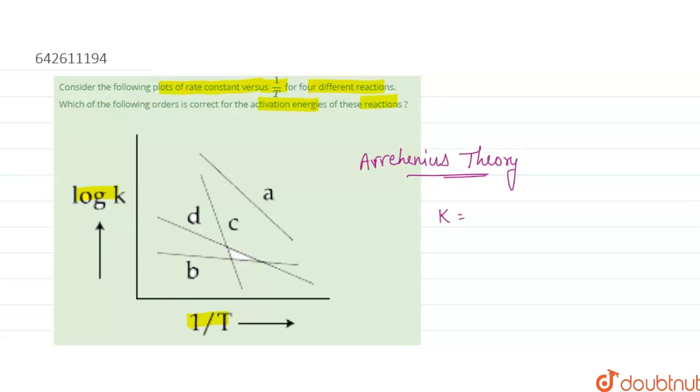The formula is k equals A e to the power minus Ea upon RT. Ea is the activation energy, R is the constant, T is the temperature.